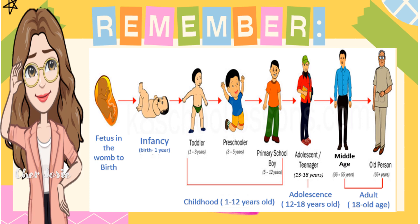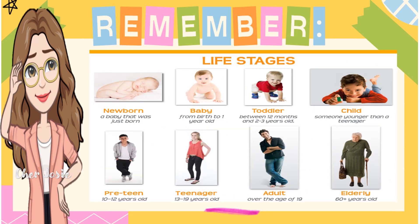Other terms used for life stages: newborn — a baby that was just born; baby — from birth to one year old; toddler — between 12 months and 2 to 3 years old; child — someone younger than a teenager; preteen — 10 to 12 years old; teenager — 13 to 19 years old; adult — over the age of 19; and elderly — 60 years old and above.